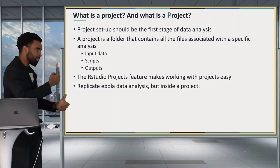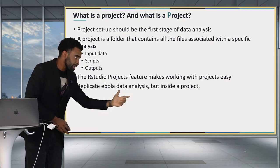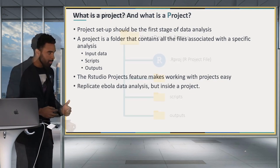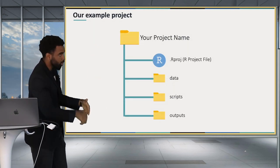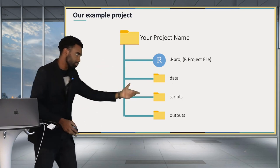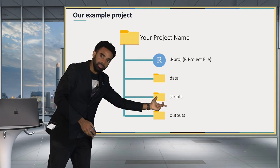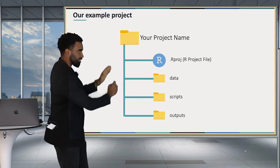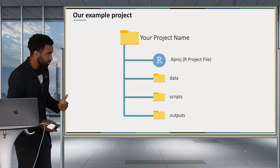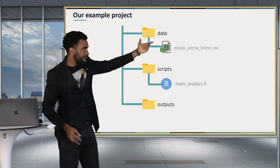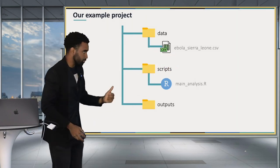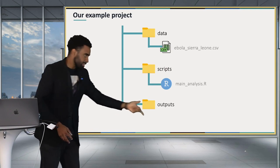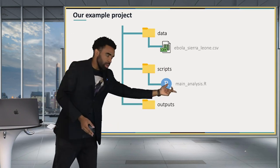What we're going to do in this lesson is replicate some of the Ebola data analysis we had done previously, but in the context of an RStudio Project, so you can see some of the benefits of working in this way. Here is a simple pictorial representation of the project folder you're going to create. You have three subfolders: a data subfolder, a scripts subfolder, and an outputs subfolder. You also have a .rproj file inside the folder that identifies it as an RStudio Project. We'll put the Ebola Sierra Leone CSV into the data subfolder, a script that analyzes the CSV into the scripts folder, and any outputs we create into the outputs folder.